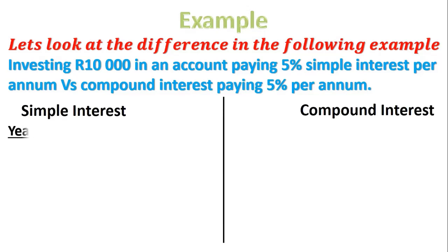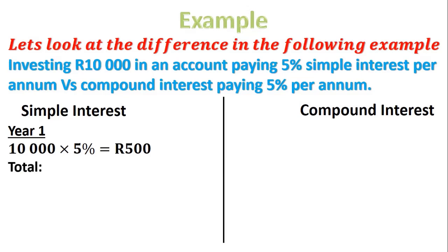For simple interest in year one, I take my 10,000 Rand, multiply by 5%, put that in my calculator, and I get 500. To get my total for the end of year one, I take 10,000 and add the 500 I've just worked out, giving me a total of 10,500 Rand.